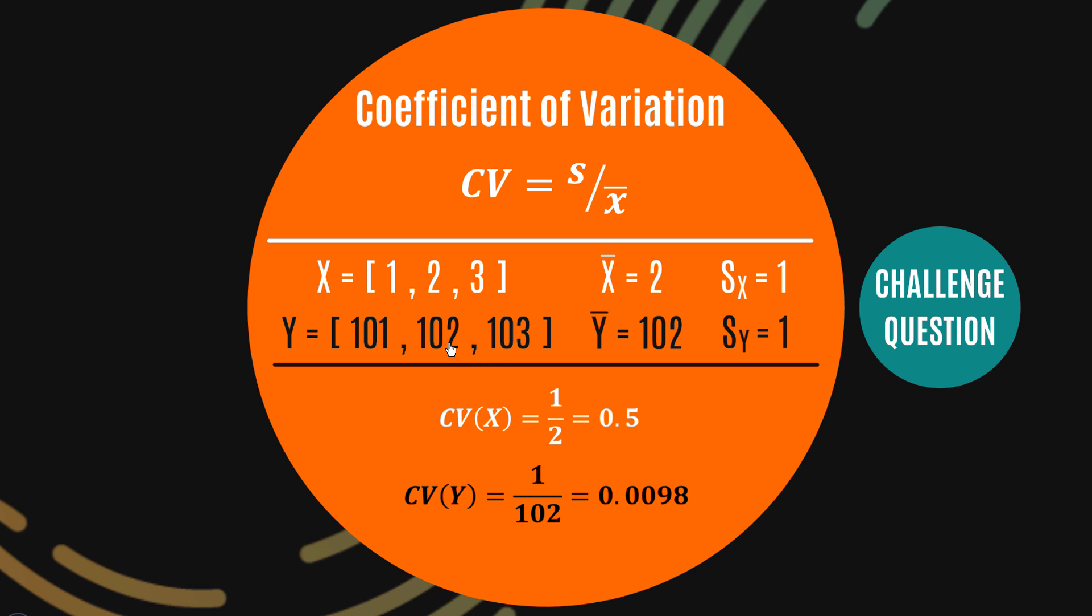And in this case the coefficient of variation shows a much larger figure for the X data set than it does for Y. So essentially all it's doing is putting the standard deviation into the scale of the data set. You're essentially scaling it by the sample mean.